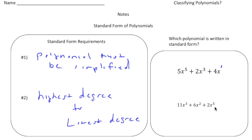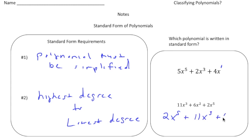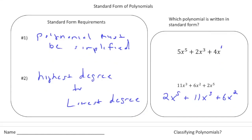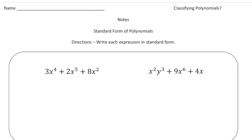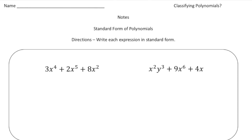Down here we have 11x cubed plus 6x squared plus 2x to the fifth. This meets the first requirement — it's simplified — but notice the degrees go 3, 2, and then 5. So in order to write this in standard form we have to put 2x to the fifth in the front: 2x to the fifth plus 11x to the third plus 6x squared.